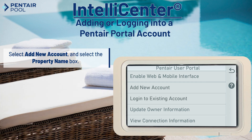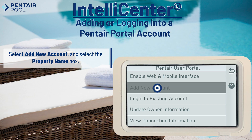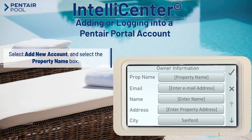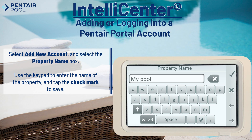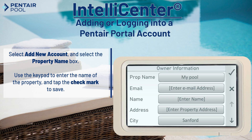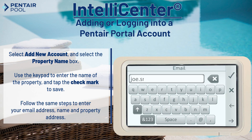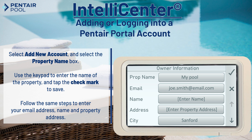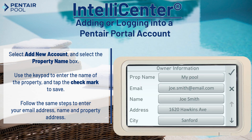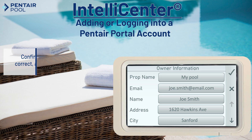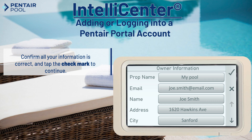For now, let's select add new account and start with selecting the property name box. Here we can use the keypad to enter the name of the property and then tap the check mark to save. Follow the same steps to enter your email, customer name and address. Confirm all the owner information is correct and tap the check mark to continue.